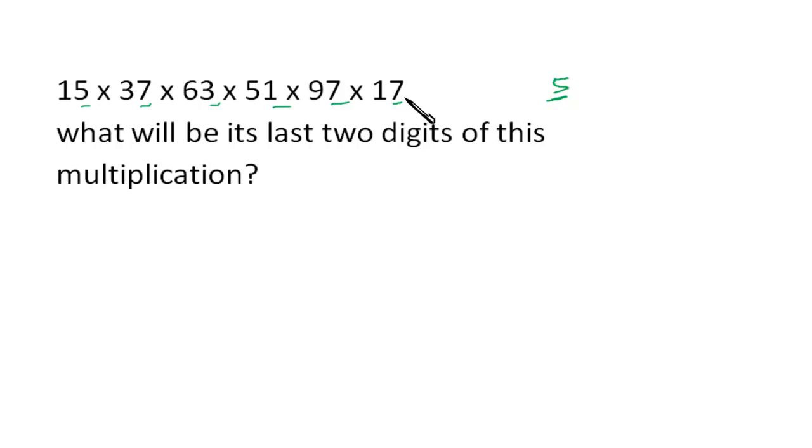Here it's 5 into 7 into 3 into 1 into 7 into 7. If you multiply these numbers by dividing by 10, whatever remainder you get, that will be the same number at the units place. Similarly, if you have to find out the last two digits, you have to divide the numbers by 100. The multiplication by 100—whatever the last two digits will be, they'll be the remainder when you divide the expression by 100.